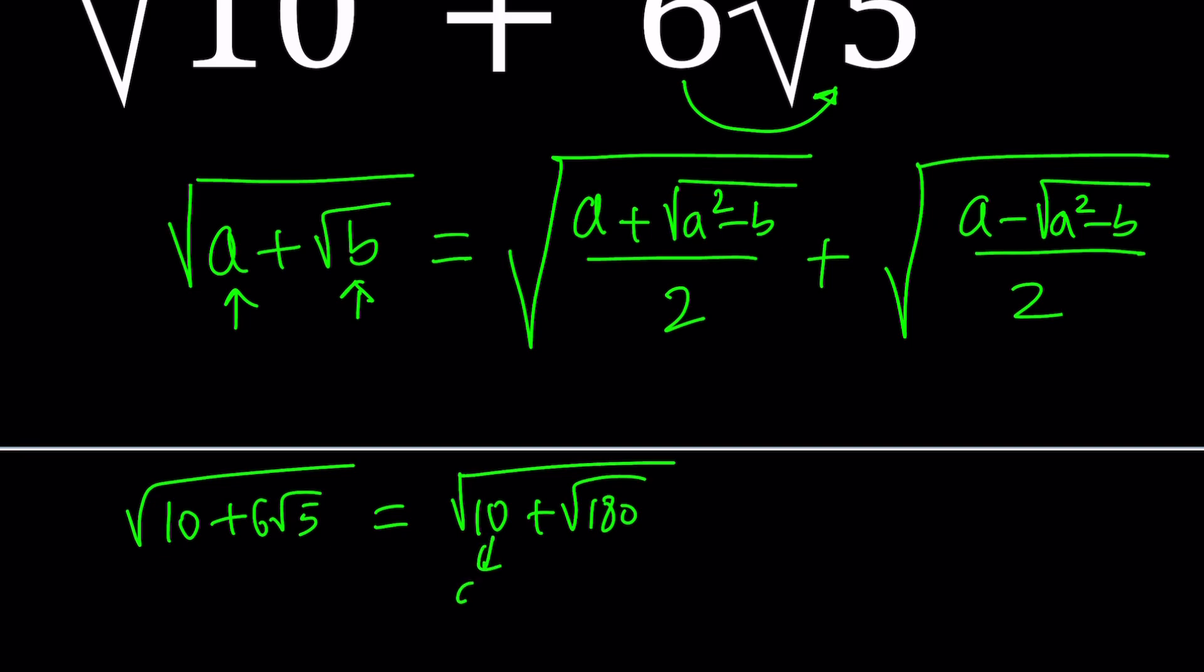So if I apply the formula, the square root of a, 10, plus the square root of a squared, which is 100, minus b, which is 180, divided by 2. Uh-oh, we ran into a problem.